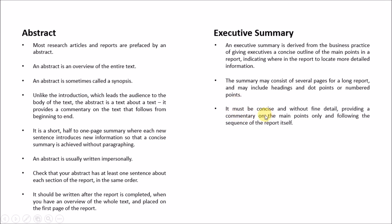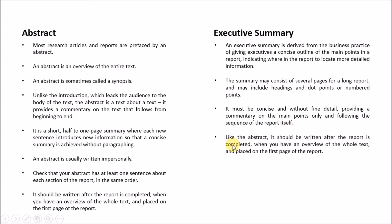In an executive summary, you may have headings, subheadings, dot points, or numbered points — whereas in an abstract, none of that. The executive summary must be concise but provides commentary on main points following the sequence of the report itself. There is a little more freedom in the executive summary; in an abstract, each and every sentence is very important. Similarly, the executive summary should also be written after the report is completed when you have an overview of the whole text, and placed on the first page of the report.